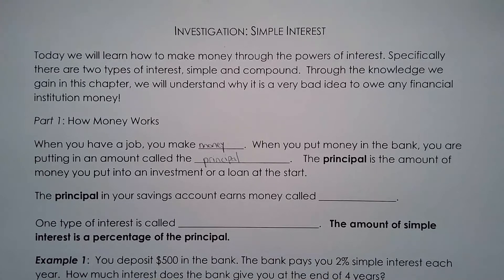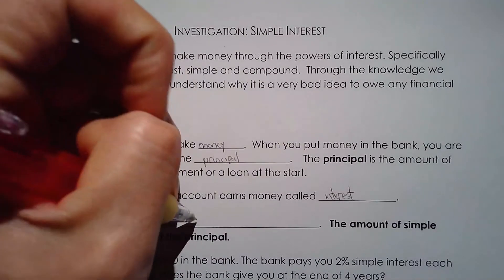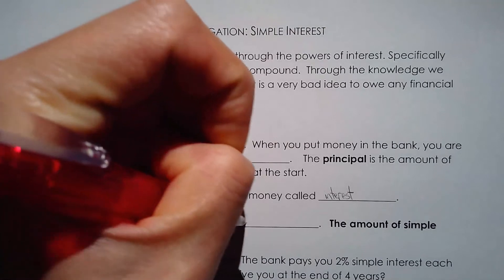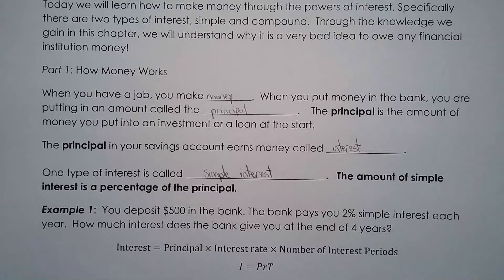When it comes to this idea of interest, it can benefit you but it can also really hurt you. You could be making lots of money through interest, but you can also end up owing a lot of money because of interest. The principal in your savings account earns money called interest. One type of interest is called simple interest. The other type, which we'll talk about in the next lesson, is called compound interest. There are not many real-life examples of simple interest, but I'll put a link in the description showing an example of bonds, which basically works with the idea of simple interest.